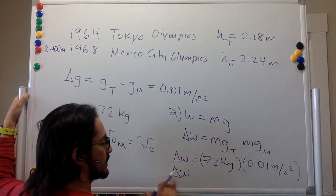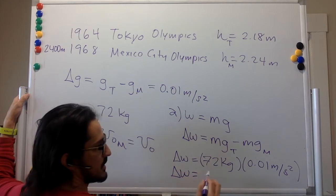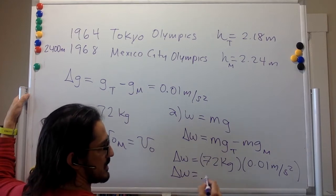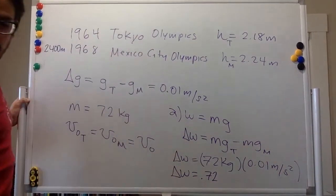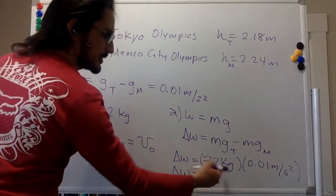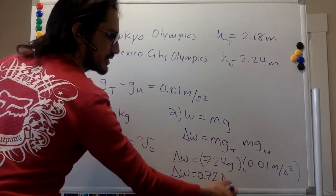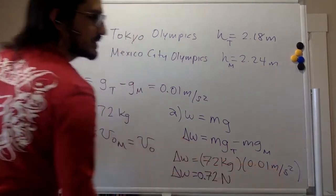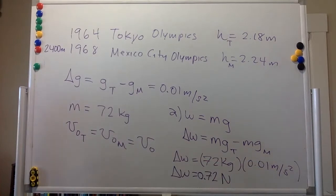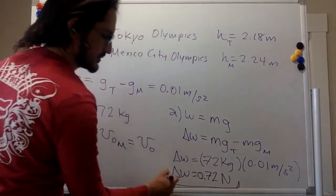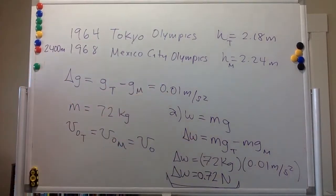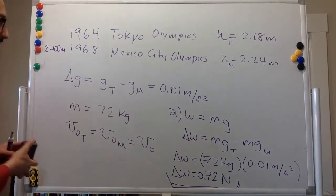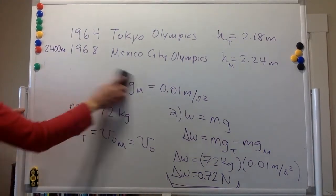So the difference in the weight of the person in the two cities is 0.72 newtons — kilograms times meters divided by seconds squared. That's the first part; it's pretty easy. It's just the mass times the difference in the acceleration due to gravity.